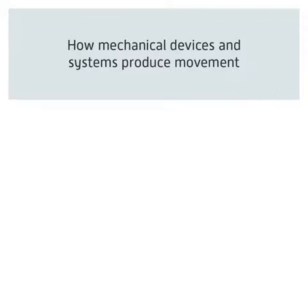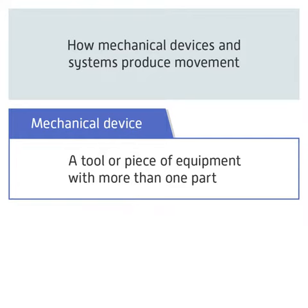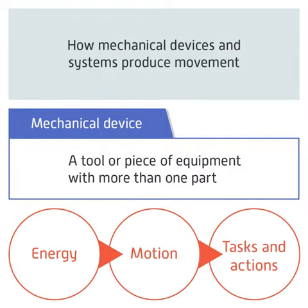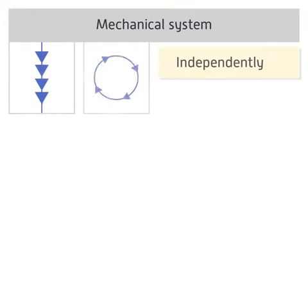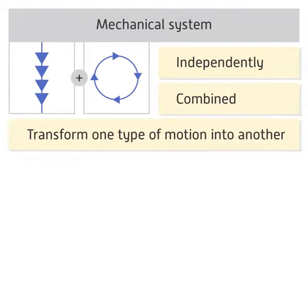In this pod we look at how mechanical devices and systems produce different types of movement. A mechanical device is a tool or piece of equipment with more than one part. The parts of the device use and manipulate energy through motion to perform tasks and actions. In a mechanical system, different forms of motion can work independently or they can be combined. Systems can also be designed to transform one type of motion into another depending on the task to be carried out.